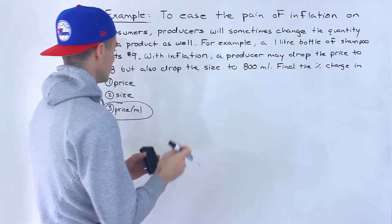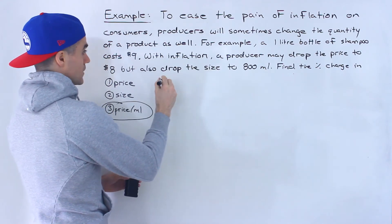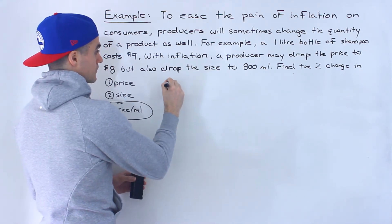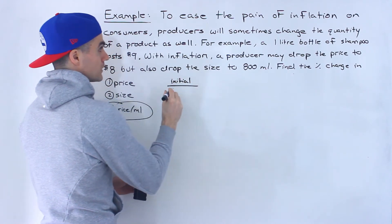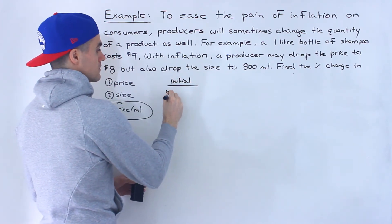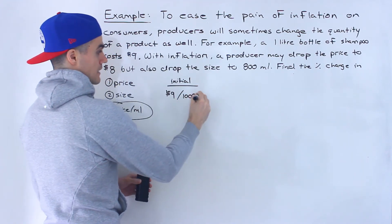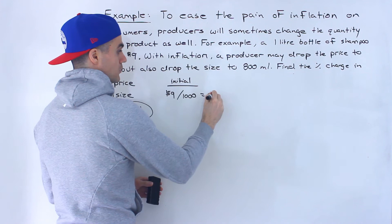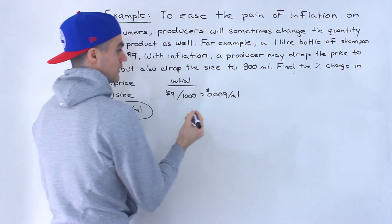So watch what happens when we look at it in terms of the price per milliliter. When we look at it relatively, well, first we've got to find the price per milliliter of both of these. So we got initial price per milliliter, we got $9 and we get 1000 milliliters for that.